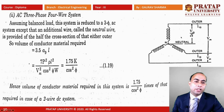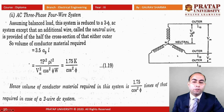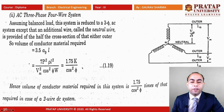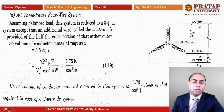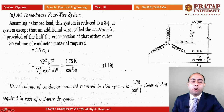For the three phase four wire AC system, there are three outer conductors and a neutral wire whose cross section is just half of the outer conductor. The volume of conductor material required is 3.5·A9·L = 1.75K/cos²φ. Hence the volume required in the three phase four wire system is 1.75/cos²φ times that required in the DC two wire system.